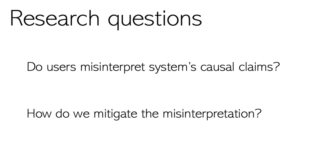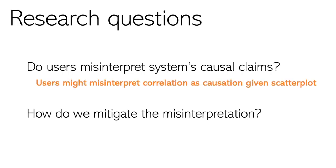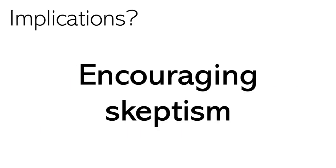Let's go back to our research questions and see what we have learned. By presenting visual evidence about correlation like a scatter plot, these systems could increase the likelihood for people to accept causal claims even when they do not sound reasonable. And a simple warning that correlation is not causation is not always effective in increasing people's awareness. So when question-answering systems do not provide reliable answers, these systems could be designed in ways to encourage skepticism. For ideas on designing question-answering systems that encourage skepticism, you can learn more from our paper at terencelaw.github.io.